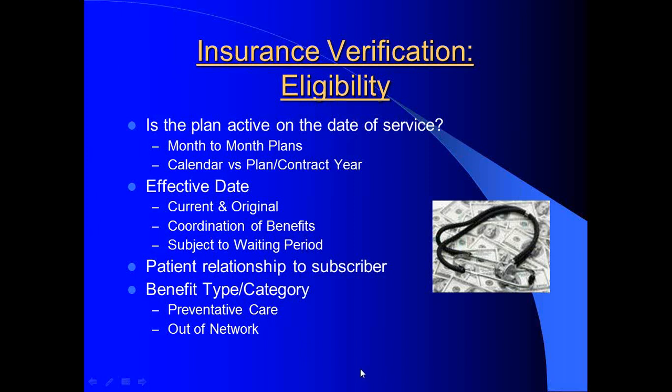For example, a mom brings a child in for care and presents Aetna coverage. Your staff verifies the benefits, determines there are no limitations, and you proceed with care. But later you learn that the mother's insurance is actually secondary to dad's Blue Cross policy, which limits benefits to only $380 per day. Even though we did the work upfront, we didn't verify the coordination of benefits — who was primary and who was secondary — and now you have a claim payable at no more than $380. In many cases, by the time the mistake is discovered, you may be past timely filing, there may not be an avenue for retro authorization, and that claim could end up not payable at all.